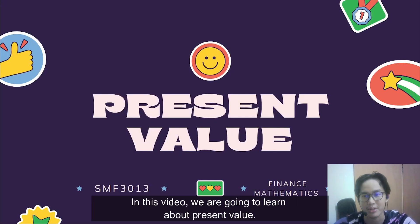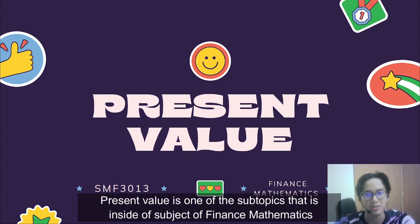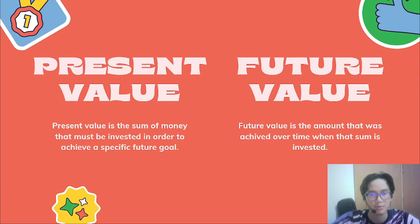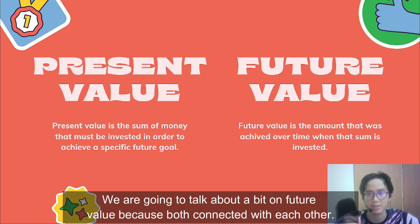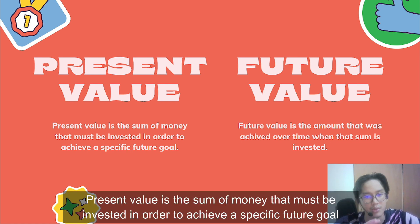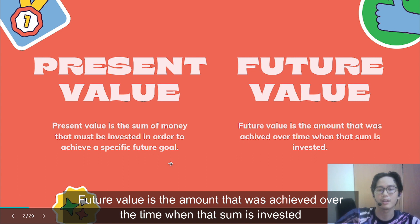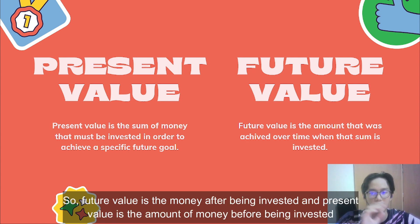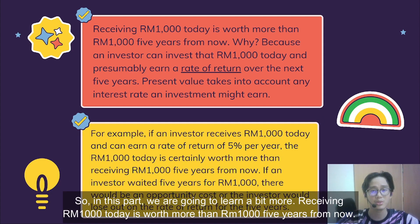Good day everyone. In this video we're going to learn about present value, which is one of the topics inside the subject of finance mathematics. We're going to talk a bit about future value because it's connected to present value. Present value is the sum of money that must be invested in order to achieve a specific future goal, and future value is the amount achieved over time when that sum is invested.